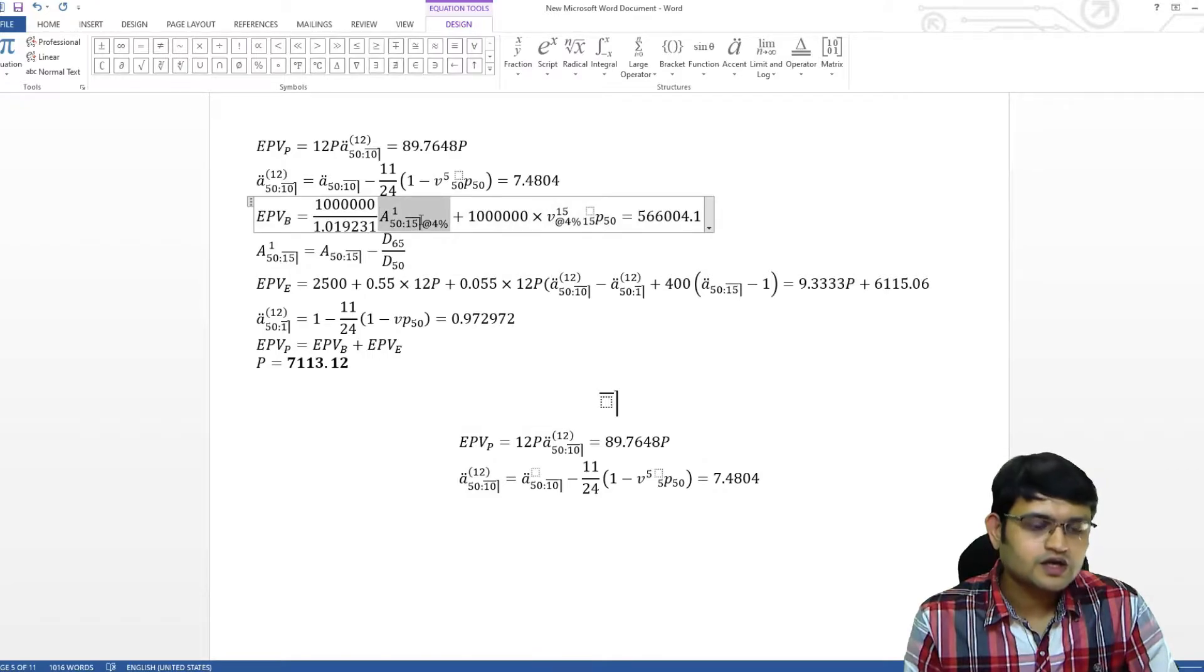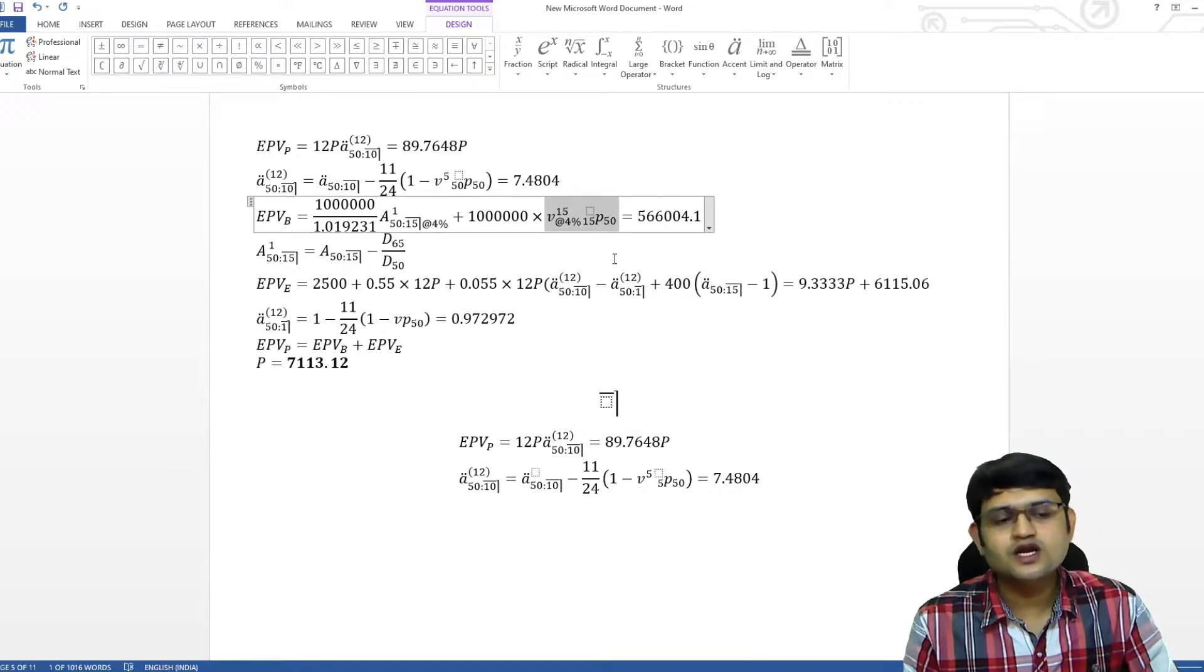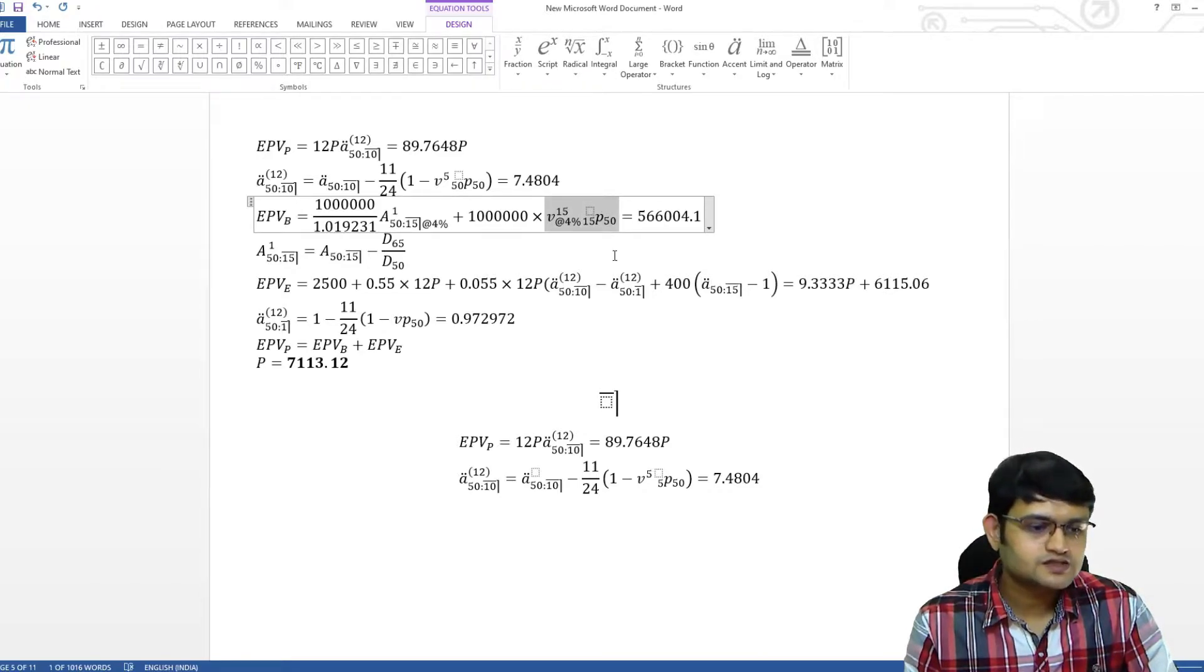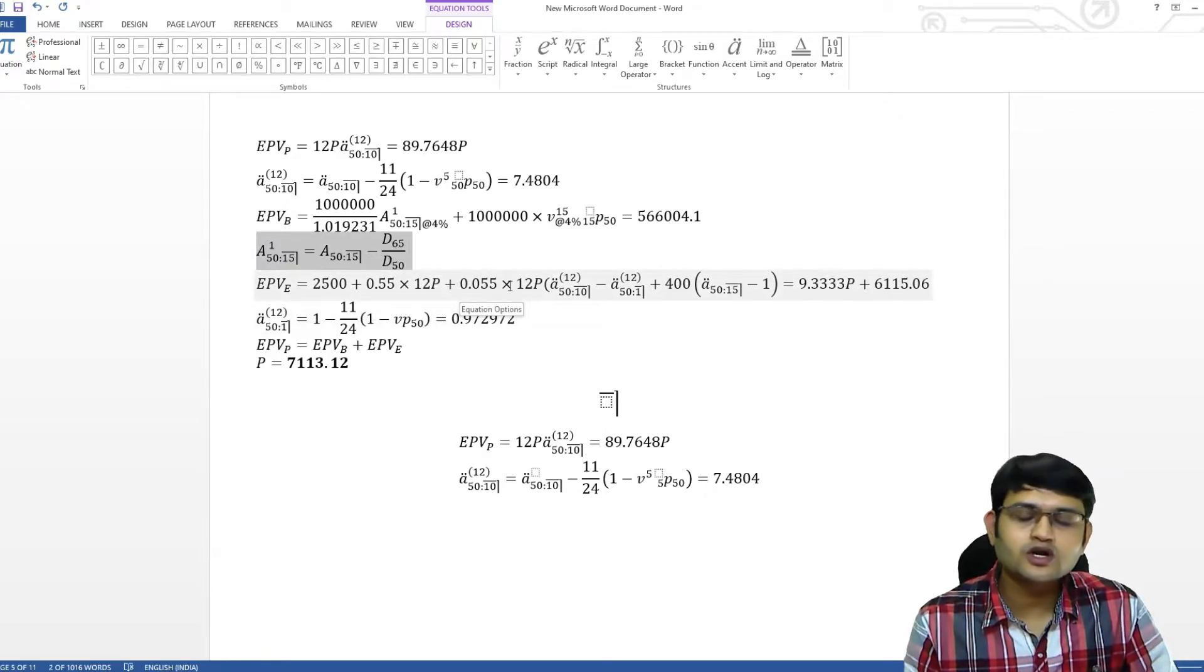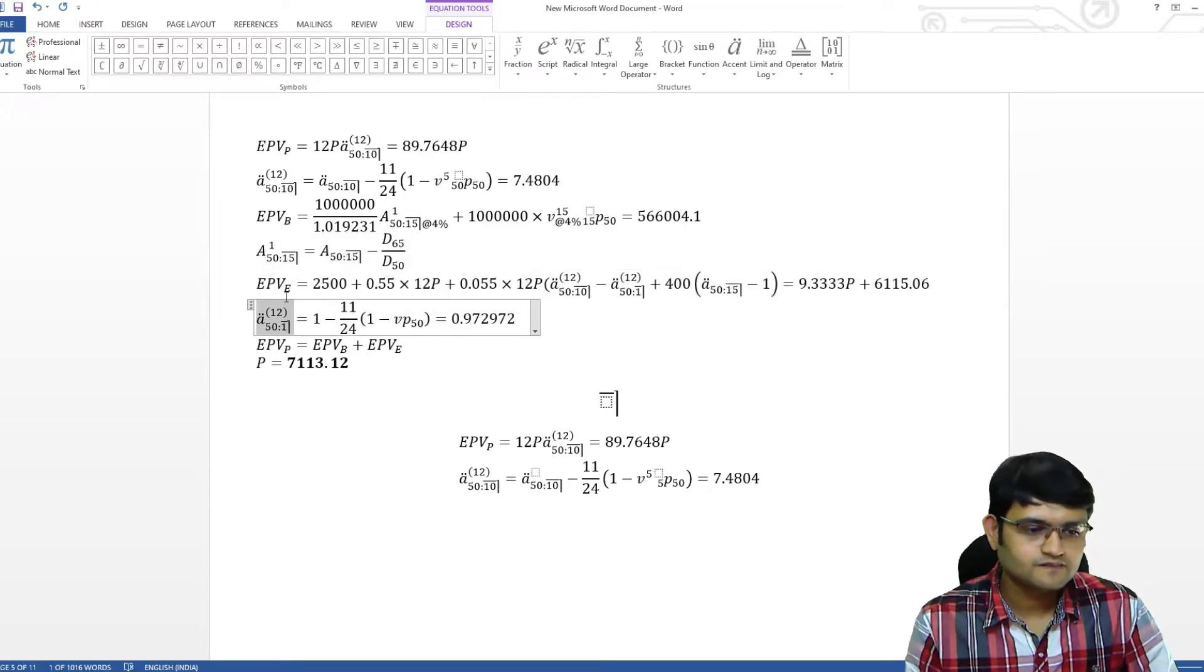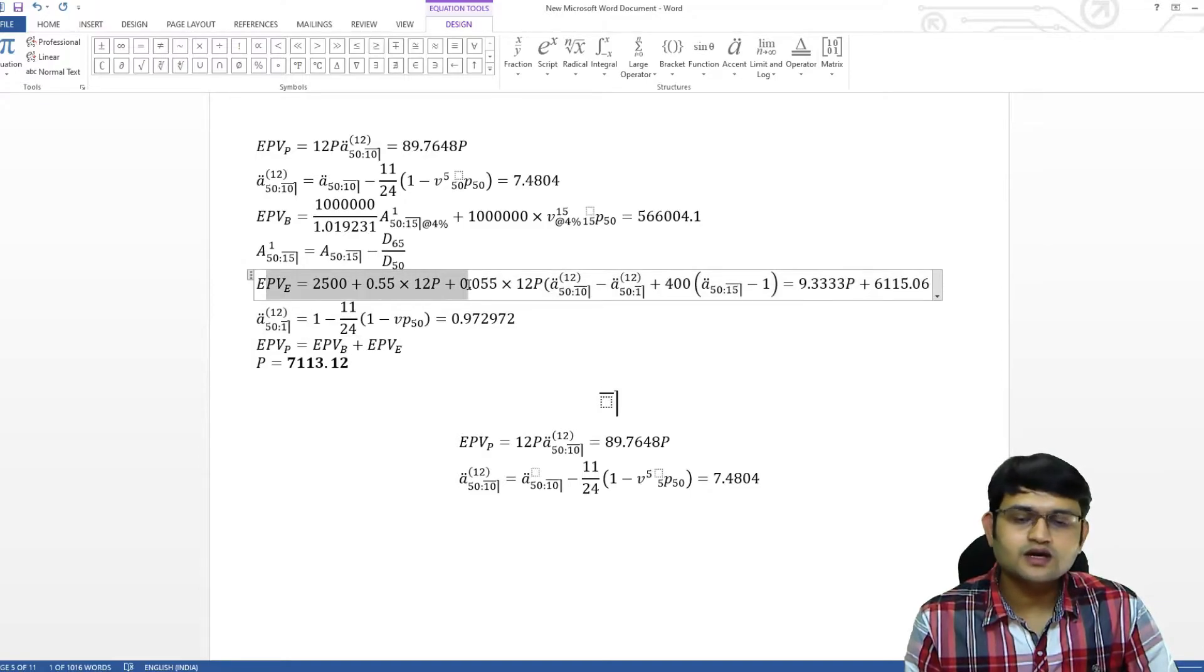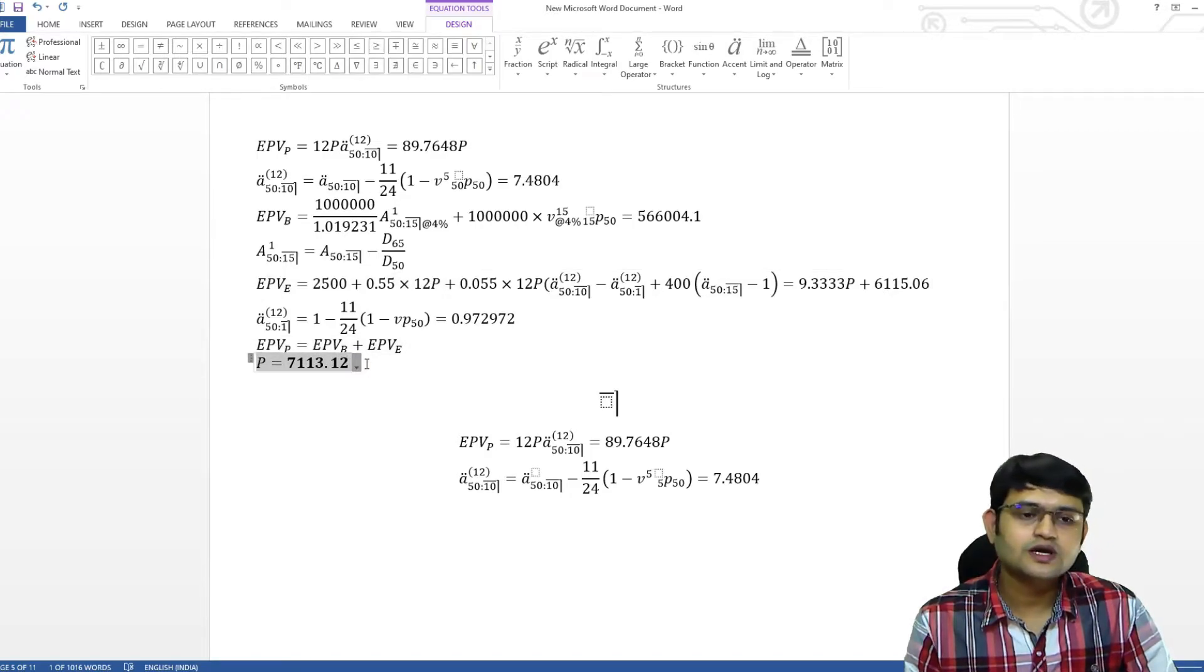Write your term assurance. For pure endowment, I always write V raise to N NPX. Solve your term assurance, only write the equations, important equations, you do not have to write all the formulas, just the important ones. Then similarly, make expected present value of expenses and finally, just write your premium.